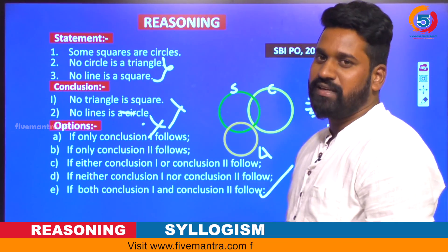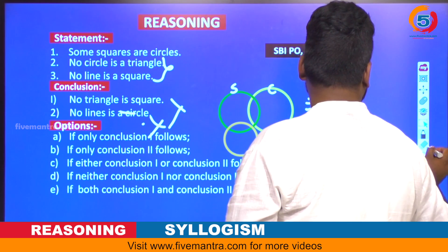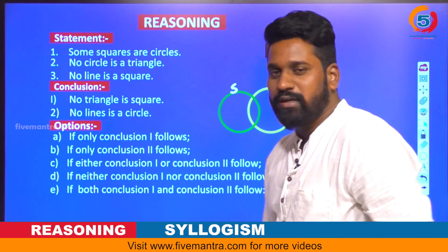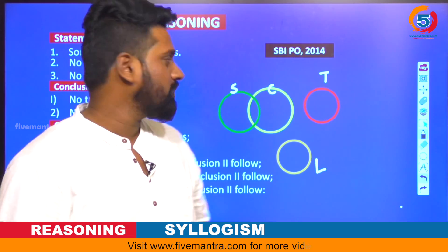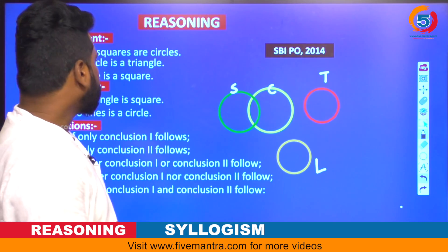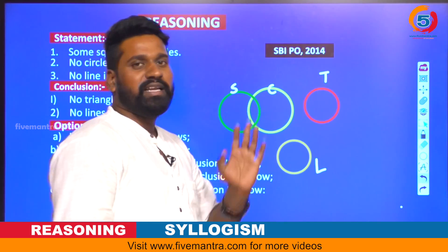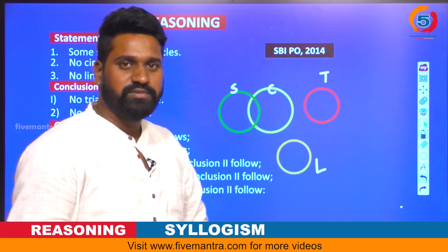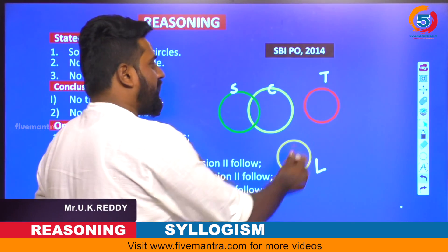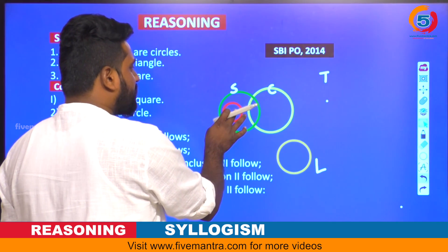The next question is from a 2014 shift — the statements are the same but the conclusions are different. The first conclusion is: no triangle is a square. It is clearly mentioned that some squares are circles and no circle is a triangle, which means no triangle is circle is correct. But no triangle is square — I am drawing triangle and circle here, placing the triangle somewhere.